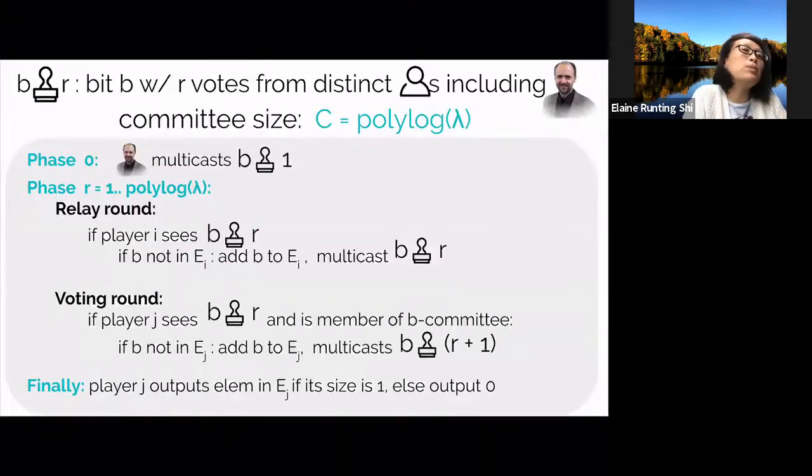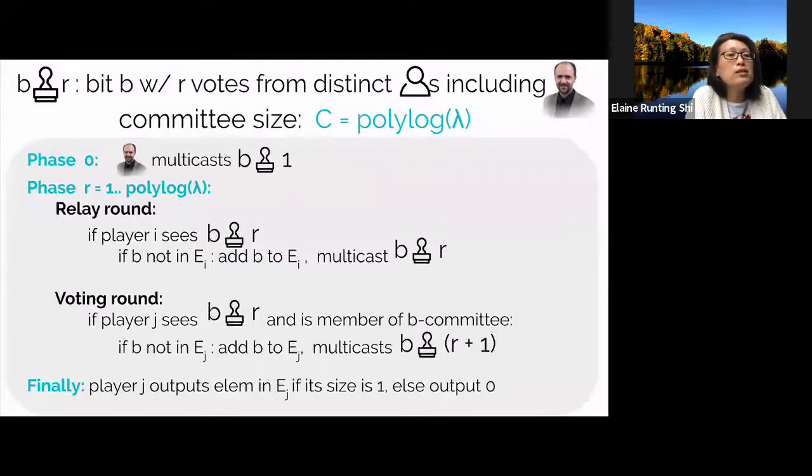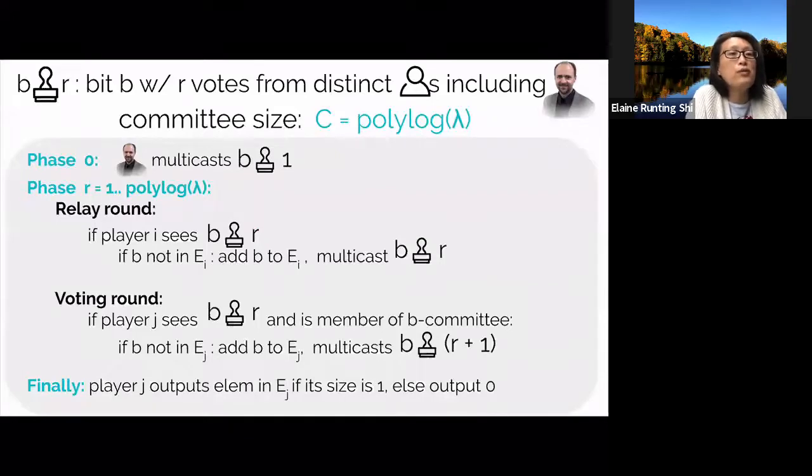Okay, so we can now put all these ideas together. In comparison with the earlier protocol with static security, here, the main difference is that the adversary doesn't know a priori who's in the committee, who's in which committee, in fact. And when players vote, they attach a VRF proof that they have eligibility to vote for the corresponding bit. Since the committee is elected with the VRF, we don't know the exact committee sizes, but we can run the protocol for sufficiently many phases, such that the number of phases is an upper bound on the committee sizes with all but negligible probability.